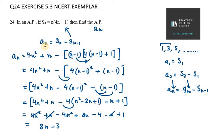So we will find a1 first. a1 value, n value is 1. So it will be 8 into 1 minus 3. So this will be 5. a2 will be 8 into 2 minus 3, which is 13.